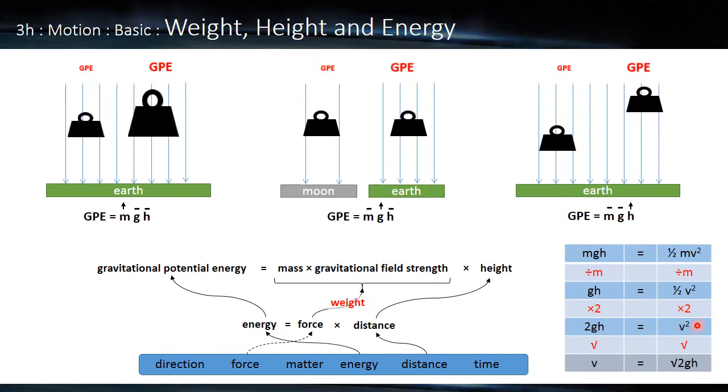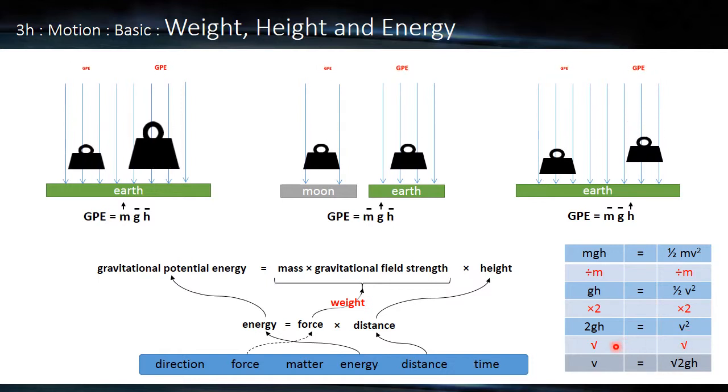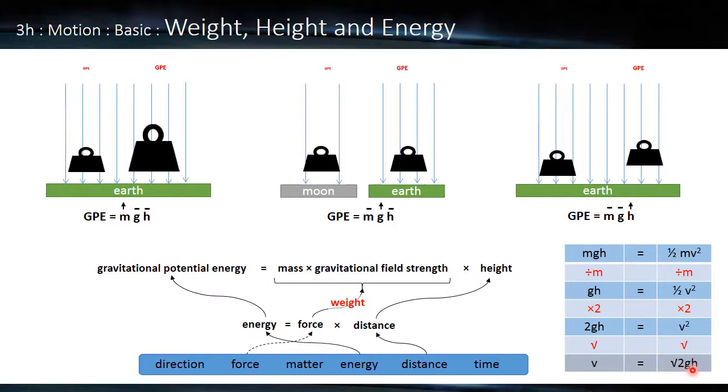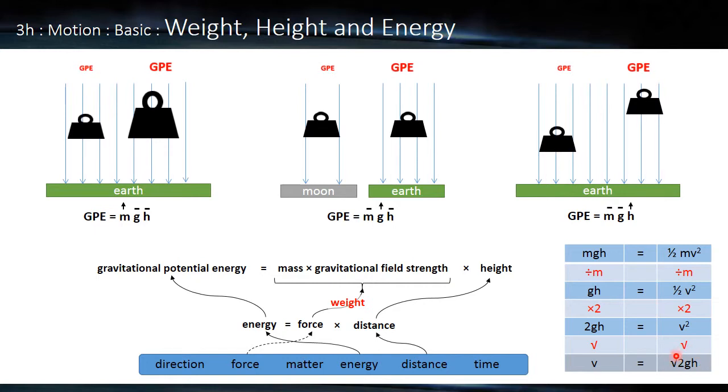So then we're left with the squared. So if we square root, which is the opposite of something being squared, we end up with velocity is the square root of 2GH. And notice mass doesn't come into that as long as we ignore air resistance.